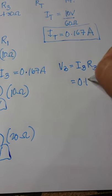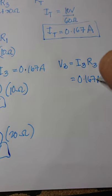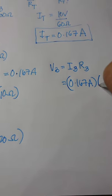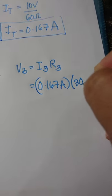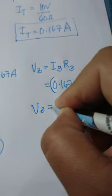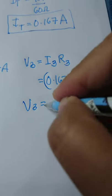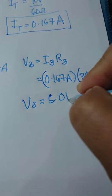Then we get 0.167 ampere times R3 is 30 ohms. So therefore V3 is equal to 5.01 volts.